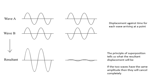The two waves from the different sources arrive at the same place. If they interfere constructively, we get a big resultant, a big amplitude. If they interfere destructively, we get a small amplitude.